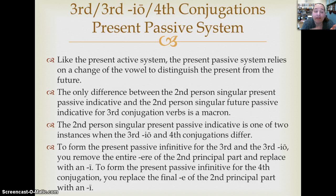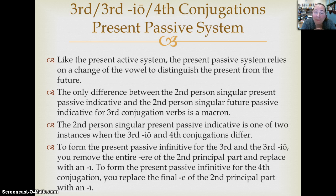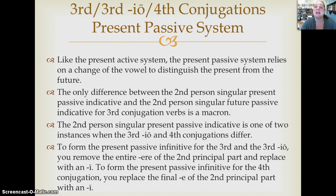You'll also have to learn to form the present passive infinitive for third and third IO, which is different from how the first, second, and fourth conjugations form it. The first, second, and fourth conjugations form the present passive infinitive by removing the final E from the present active infinitive and replacing it with a long I. The third and third IO remove the ERE from the second principal part and replace it with an I.